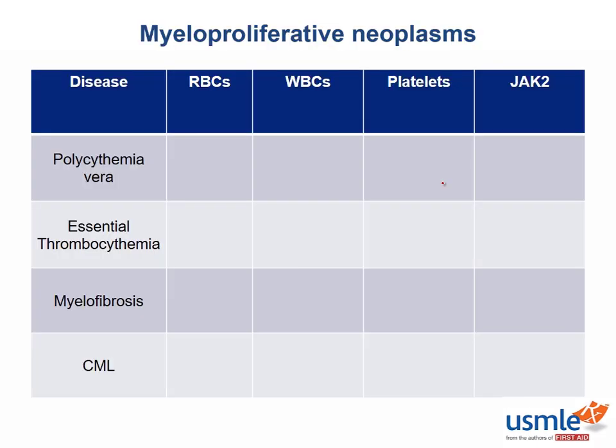The chronic myeloproliferative disorders are a collection of different diseases that have two things in common: one, they are all chronic diseases, and two, they all involve excess proliferation of cells of the myeloid lineage. All in all, there are four major disorders within the chronic myeloproliferative disorders, and these include polycythemia vera, essential thrombocythemia, myelofibrosis, and CML.